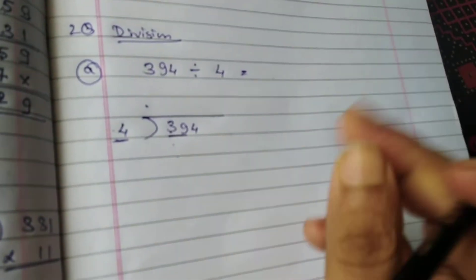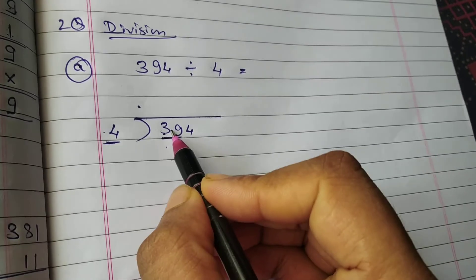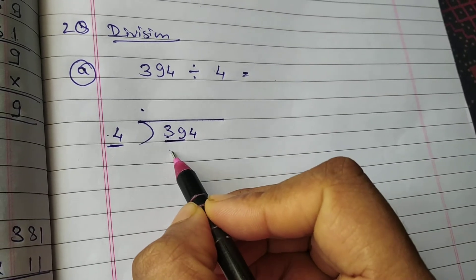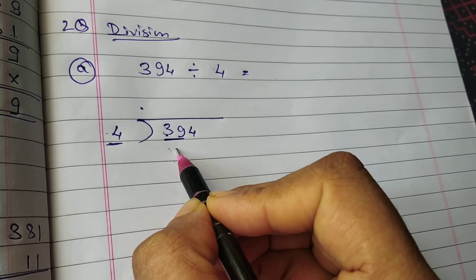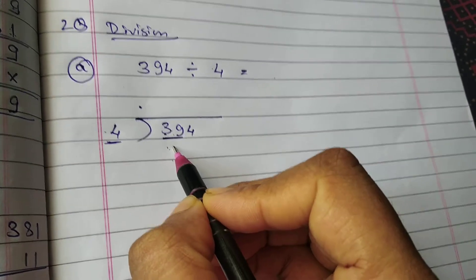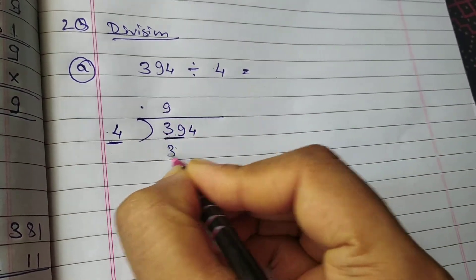4 nines are 36. 4 tens are 40. 40 is also near to it and 36 is also near to it. Kya haan 40 se subtract kar sakte hai? Nahin 39 minus 40 to nahin ho sakta. So 9s are 36.